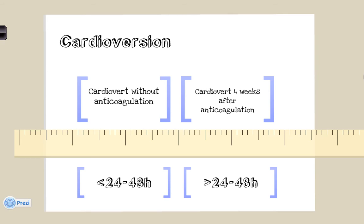The onset of atrial fibrillation is crucial to determine the appropriate time to cardiovert a patient. If a patient presents in under 24 to 48 hours, you may cardiovert them immediately without anticoagulation. Over 24 to 48 hours, stasis of the blood in the atrium increases the chance of thrombus formation that can disseminate into the systemic circulation once sinus rhythm is restored. As a result, it is recommended that cardioversion only occur 4 weeks after the commencement of anticoagulation therapy.